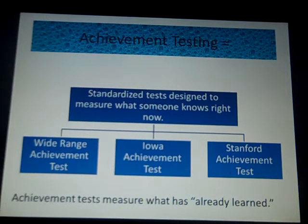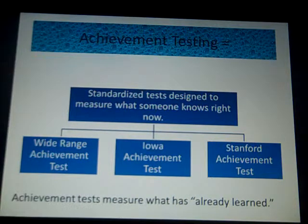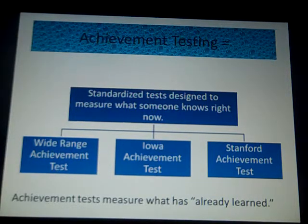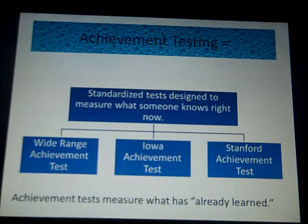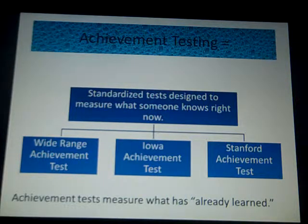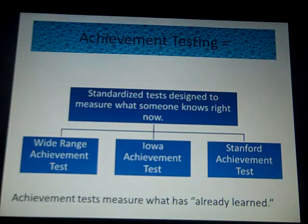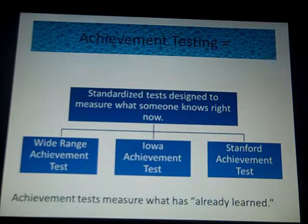Achievement tests, on the other hand, are standardized tests designed to measure what somebody knows right now. The exam given in class is an achievement test because it measures what you know at that point in time — it's not predicting what you'll do in the future. The Wide Range Achievement Test, the Iowa Achievement Test, and the Stanford Achievement Test are three examples of achievement tests.